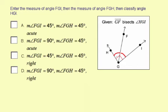Now HGI, the large angle, is the right angle, so the measure of angle HGI equals 90 degrees.